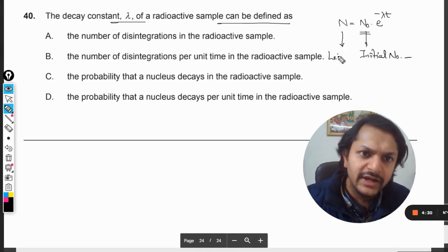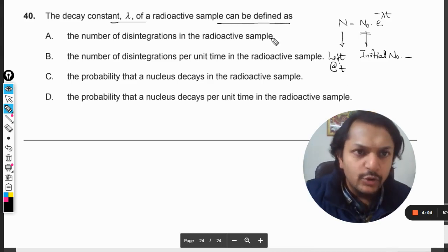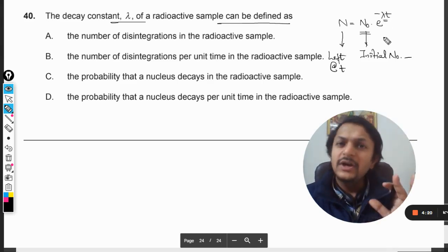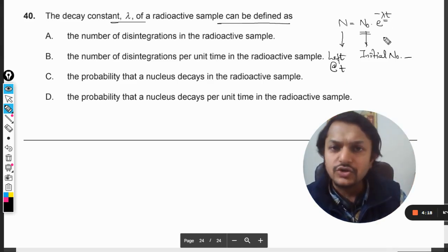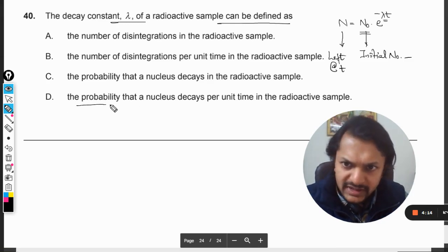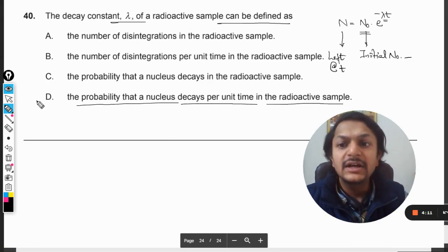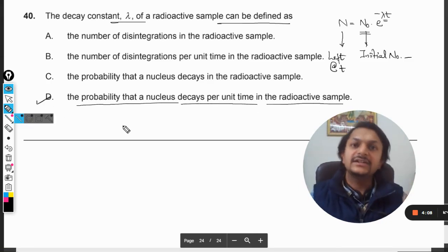And N is the number of nuclei left at time t, at any time t. So this is how we do it. Lambda can be defined in many ways, although there are other definitions also available. But according to this question, the probability that a nucleus decays per unit time in the radioactive sample - this is the correct definition for lambda.